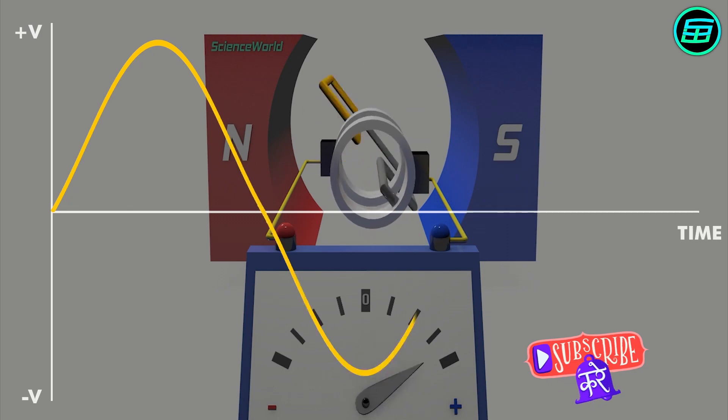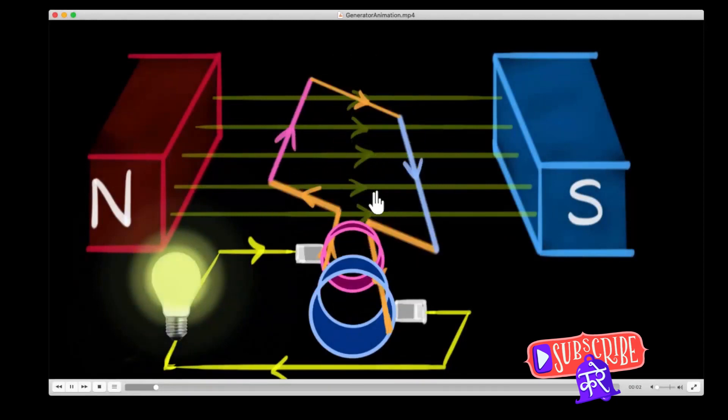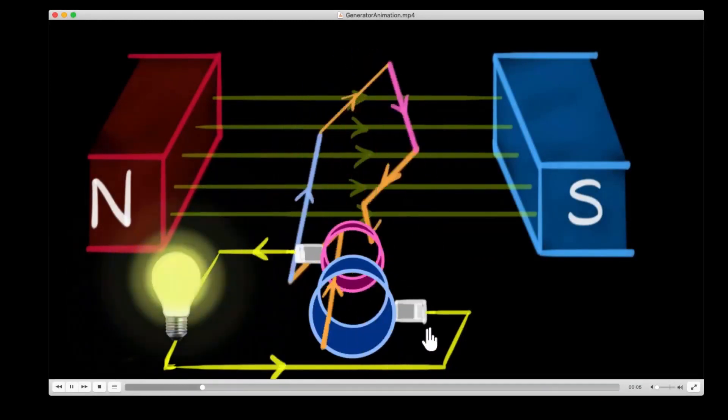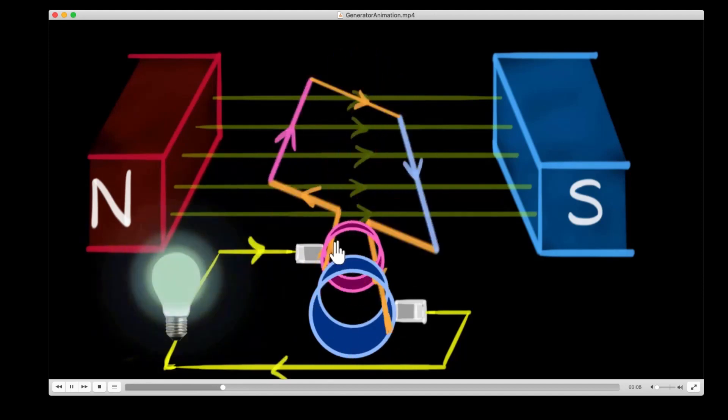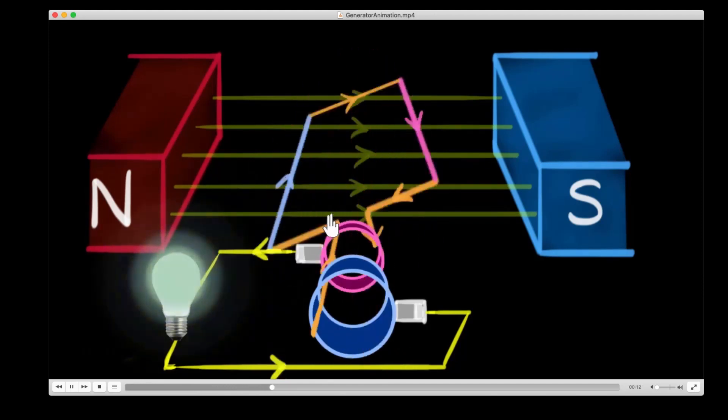Imagine this: you're a magician, and your magic wand is a magnet. With a simple wave of your magnet wand, you wield the power to generate electricity. Sounds surreal, doesn't it? Well this is no magic, it's a principle grounded in science and it's called electromagnetic induction.